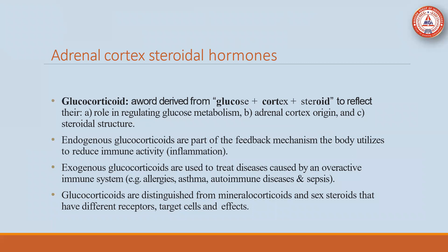Where does the word glucocorticoid come from? The word glucocorticoid is derived from glucose plus cortex plus steroid — representing its role in regulating glucose metabolism, its adrenal cortex origin, and its steroidal structure. Therefore, it is known as glucocorticoid.